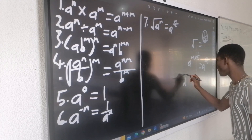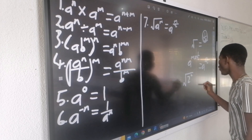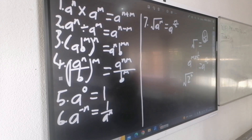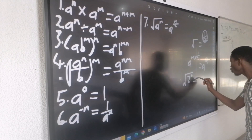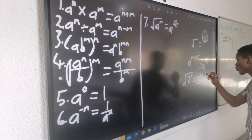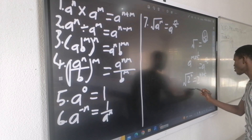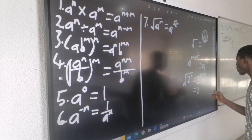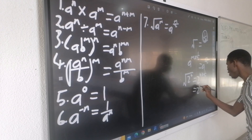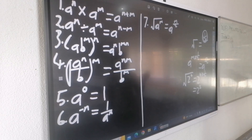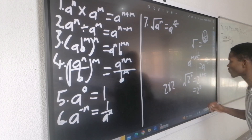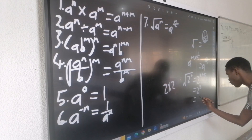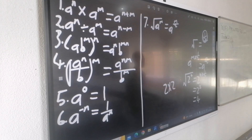Let us try that with a number. I have the square root of 2 to the power 4. Applying exponential law number 7: 2 to the power 4, and the square root gives 1 over 2. This means 4 multiplied by 1 over 2 gives 2 to the power of 2. I know that 2 to the power 2 means 2 times 2, which is 4. So my final answer is 4.